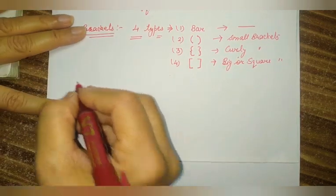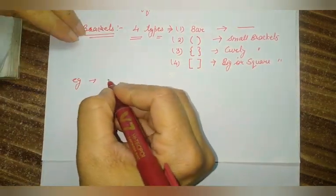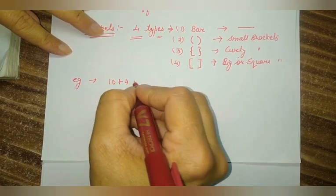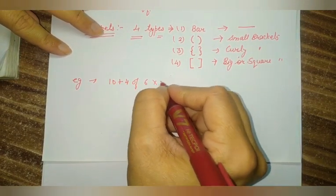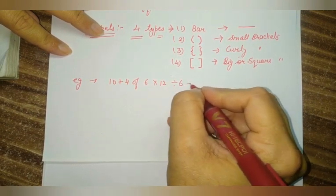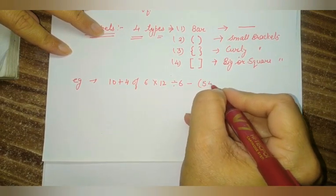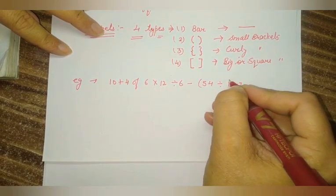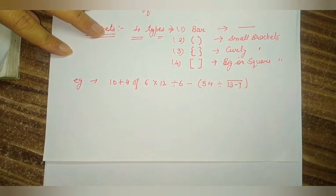That example is: we have to solve 10 plus 4 of 6 multiply by 12 divide by 6 minus, open small bracket, 54 divide 13 minus 7 with a bar over 13 and 7, close bracket. So according to the rule, first of all we have to solve the bar. And when we solve this portion, the rest part of the question will remain the same, and we write it again step by step.